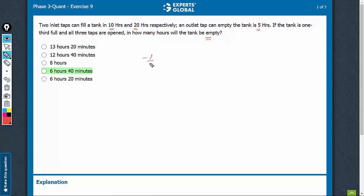So, negative 1 upon 10, negative 1 upon 20, and positive 1 upon 5.